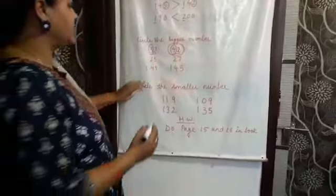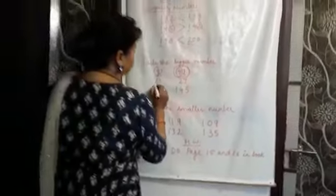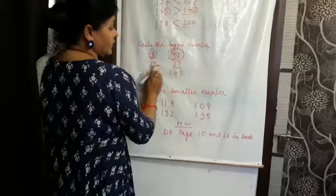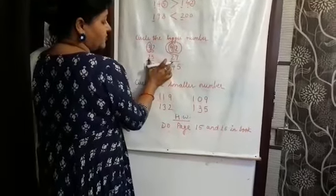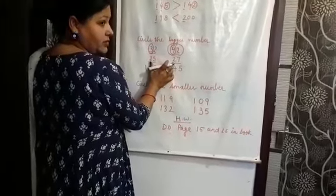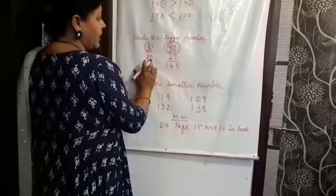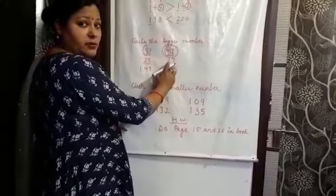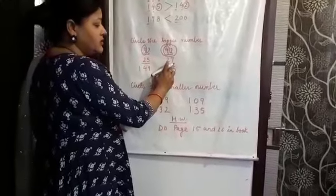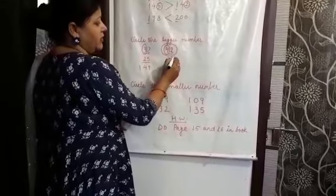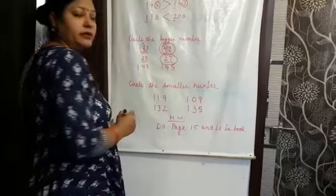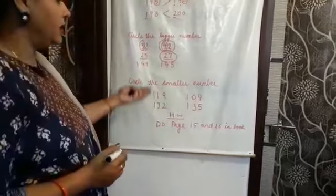Now see the next number. At the tens place, both the numbers are the same. At the ones place, here it is 5 and here it is 7. So which number is bigger? 7 is bigger. So you will circle this number.